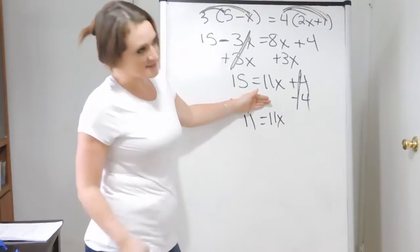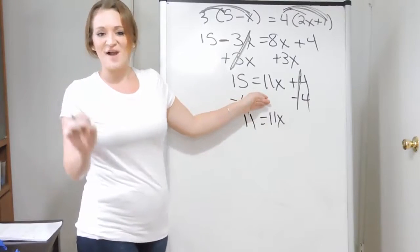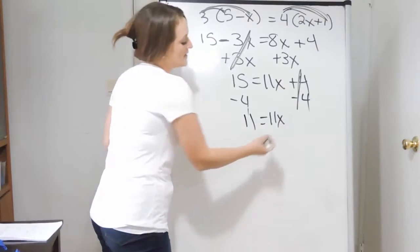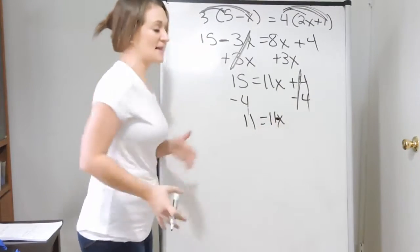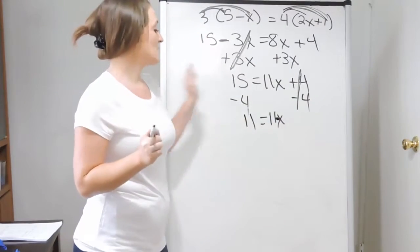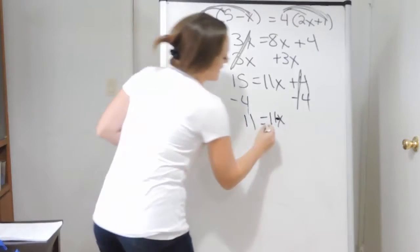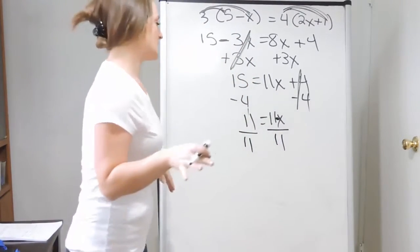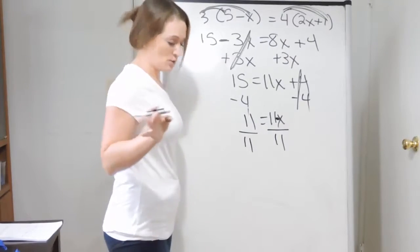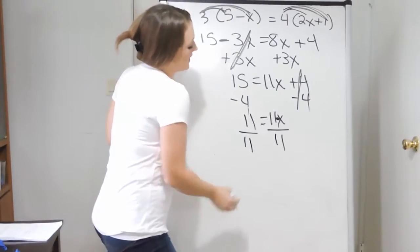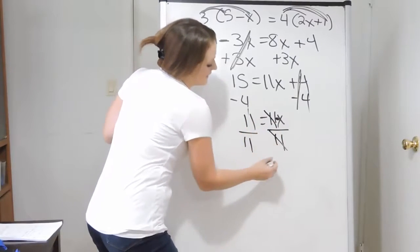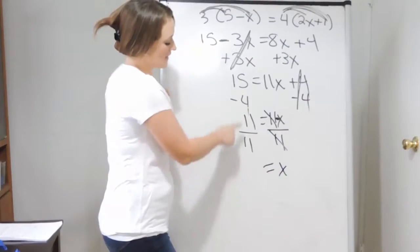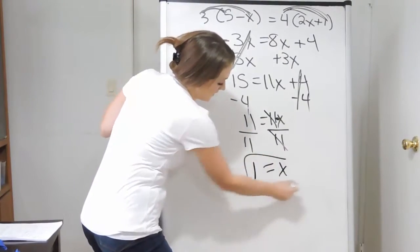Typically our last step in solving an equation is to divide out the coefficient. Here on the right-hand side, 11x is 11 times x, so we divide both sides by 11. On the right, 11 divided by 11 cancels, leaving x. And on the left, 11 over 11 gives us 1. So x equals 1.